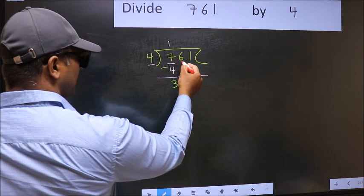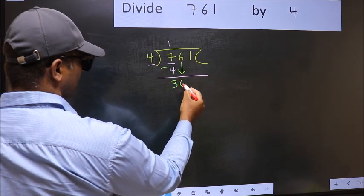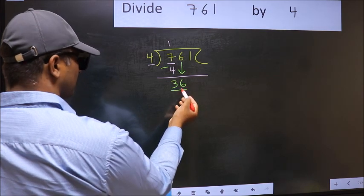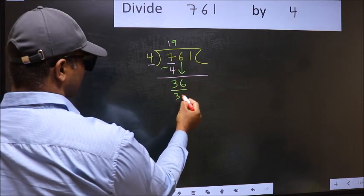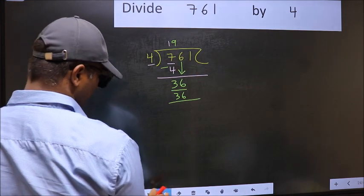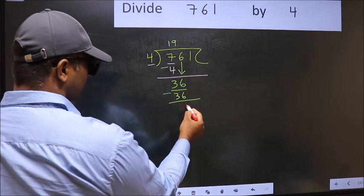After this, bring down the beside number. So 6 down. Now 36. When do we get 36 in 4 table? For example, 4 nines 36. Now you should subtract. 36 minus 36, 0.